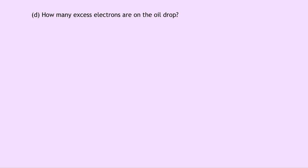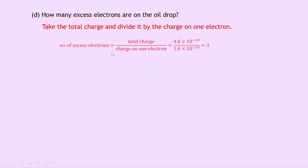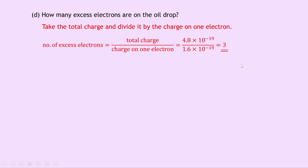Lastly, part D says how many excess electrons are on the oil drop? Well to find this we simply need to take the total charge and divide it by the charge on one electron. So we can say the number of excess electrons is equal to the total charge divided by the charge on one electron, which equals 4.8 times 10 to the minus 19, our answer from before, divided by 1.6 times 10 to the minus 19, which equals 3. So there are 3 excess electrons on the oil drop.